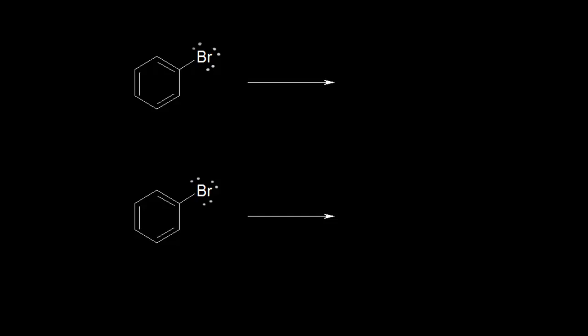We've done a lot of electrophilic aromatic substitution reactions. Let's look at the possibility of a nucleophilic aromatic substitution. If we started with bromobenzene and added a nucleophile — something like the hydroxide anion with a negative 1 formal charge — it could function as a nucleophile and would attack the carbon that is bonded to our halogen.